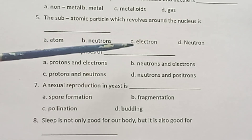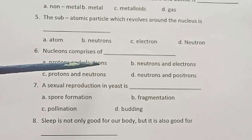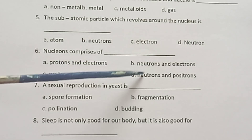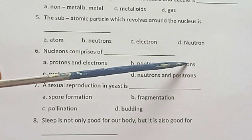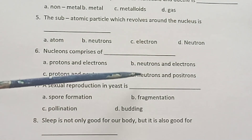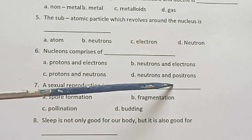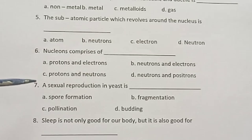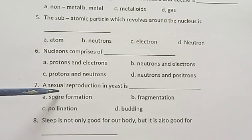Sixth one: Nucleons comprises of dash. Options: protons and electrons, neutrons and electrons, protons and neutrons, neutrons and positrons.